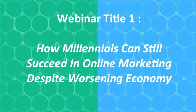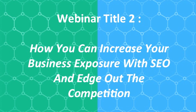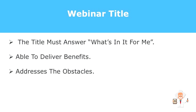Title number one: How millennials can still succeed in online marketing despite a worsening economy. Title number two: How you can increase your business exposure with SEO and edge out the competition. Using this formula allows you to use the best keywords for a more effective title compared to just coming up with one off the top of your head. The title answers the 'what's in it for me' question, gives one method to deliver the benefit, and addresses the obstacles which the webinar will help overcome.